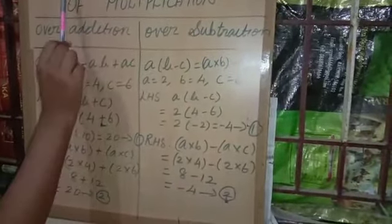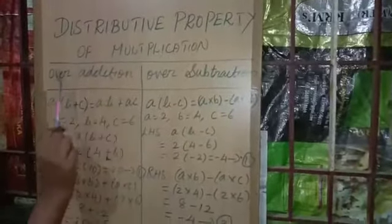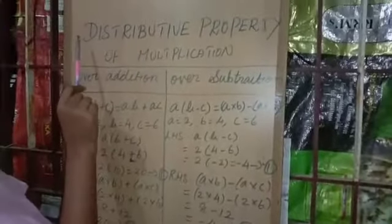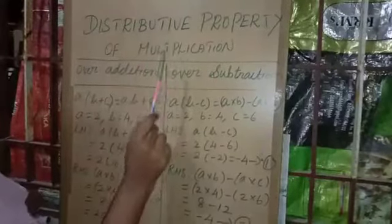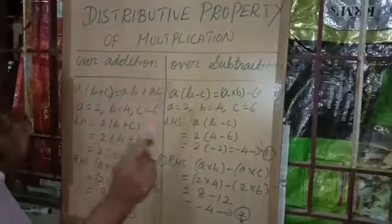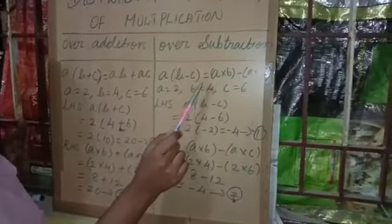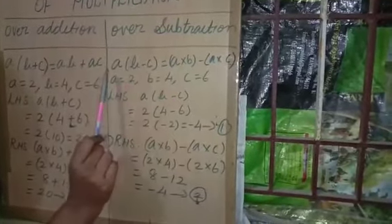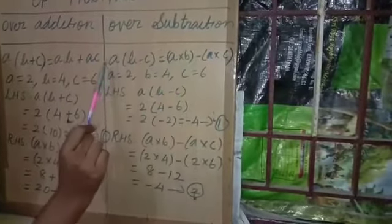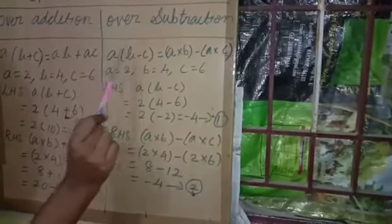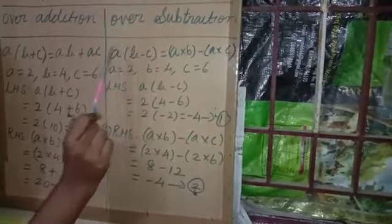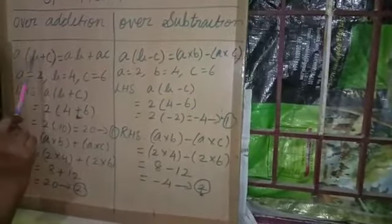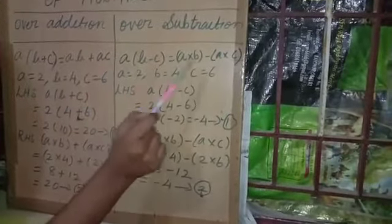Here we check the distributive property of multiplication over addition — this property is true for addition. Next, we check the distributive property of multiplication over subtraction. Instead of plus, put minus. A into B minus C equals A into B, then minus A into C. Why minus? Because plus into minus gives minus. Here plus into minus is minus, then we multiply A with C. Plus into plus is plus, but here plus into minus is minus.